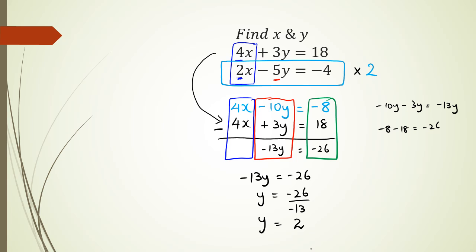So from here, I will choose one of the equations. I'm going to choose the first equation, which is 4x plus 3y equals 18. I'm going to substitute my y, which is 2, which equals 18. So I have 4x plus 6 equals 18. Rearranging it, I have 4x equals 18 minus 6. 4x equals 12, and x equals 12 divided by 4. And therefore, x is equal to 3.